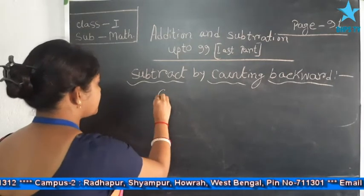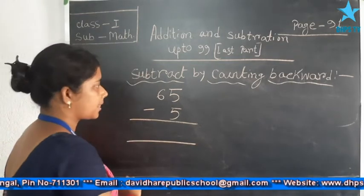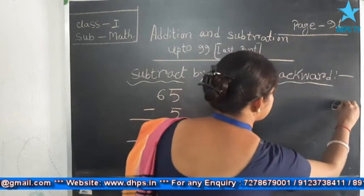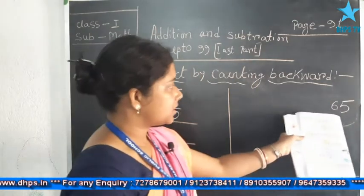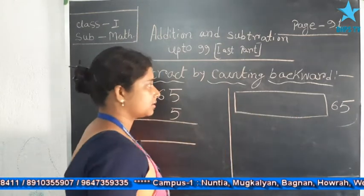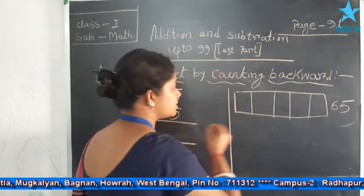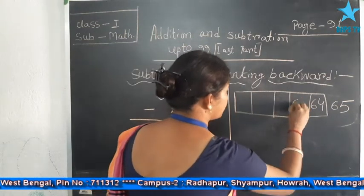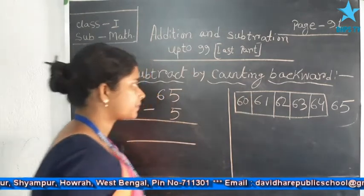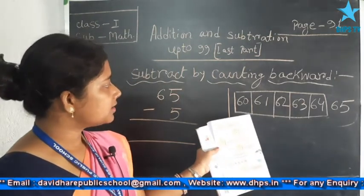Again I am writing the same example: 65 minus 5. On the right side, first write the number 65. Then you have to go backwards for 5 numbers. Before 65 comes 64, before that 63, 62, 61, 60. By counting backwards from 65, in the 5th position I get the number 60.